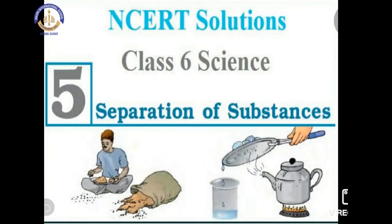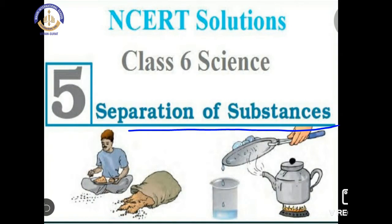Hello students, today we will learn Chapter 5: Separation of Substances. The heading 'separation of substances' means that when your mother stores wheat or any other pulses, she first removes the stones or other solid impurities from the wheat and then stores it in a container. There are also processes like evaporation and condensation used to separate impurities from water. There are many separation processes we will learn in this chapter.